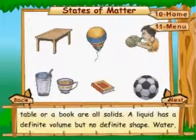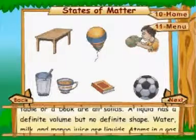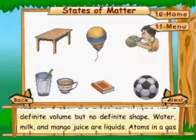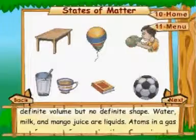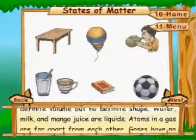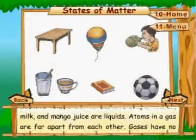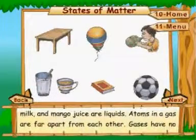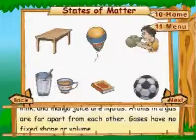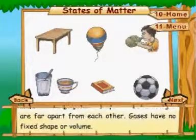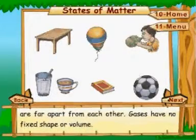A liquid has a definite volume but no definite shape. Water, milk, and mango juice are liquids. Atoms in a gas are far apart from each other. Gases have no fixed shape or volume.